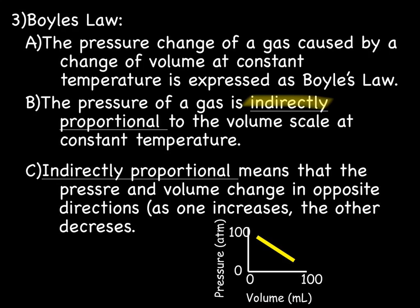So what does indirectly proportional mean? It means that the pressure and volume change in opposite directions. If you increase the pressure, you're decreasing the volume. If you increase the volume, you're decreasing the pressure. Unlike directly proportional where the variables move in the same direction, indirectly proportional means that the variables move in opposite directions.